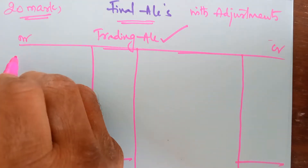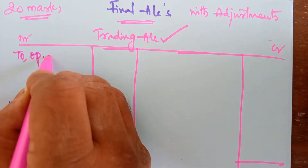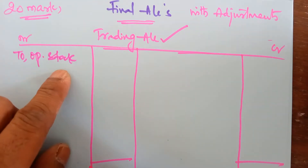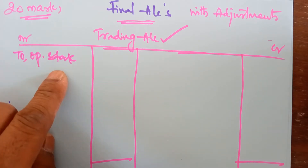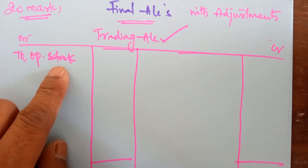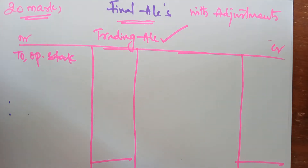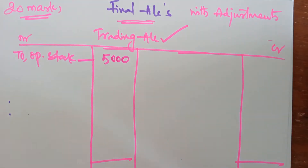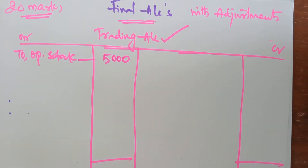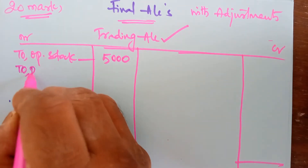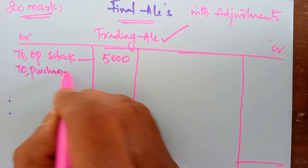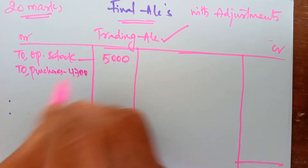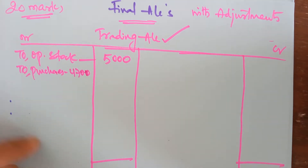The first item is opening stock. Opening stock always appears on the debit side of the trading account because these are goods available in the business at the start of the year and will be added to purchases. Therefore opening stock will be taken on the debit side of the trading account — opening stock is 5,000. The next item, purchases, is also goods, so it should be taken in the trading account. Write its amount in the inner column because returns may be there that you have to deduct.